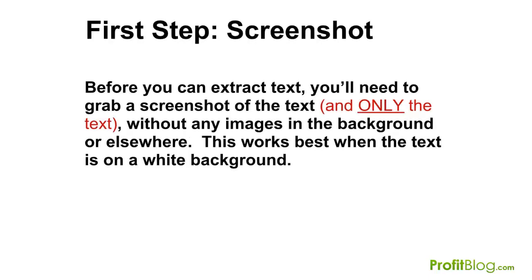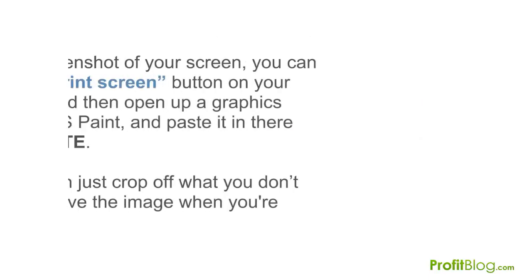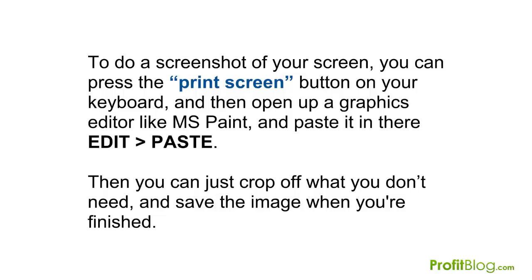Before you can extract text, you'll need to grab a screenshot of the text — and only the text — without any images in the background or elsewhere. This works best when the text is on a white background. To take a screenshot, press the Print Screen button on your keyboard, then open a graphics editor like MS Paint or Photoshop, paste it in, crop off what you don't need, and save the image.